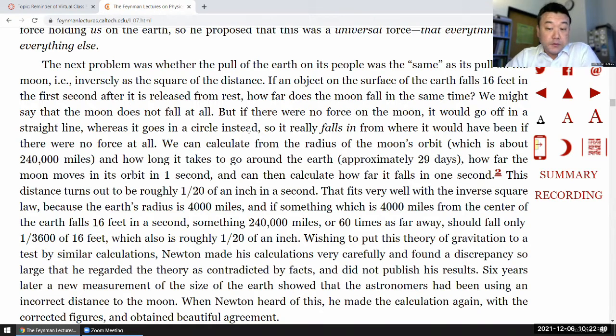But, from the rest, how far does the moon fall in the same time? We might say that the moon does not fall at all, but if there were no force on the moon, it would go off in a straight line, whereas it goes in a circle instead. So, it really falls in from where it would have been if there were no force at all. We can calculate from the radius of the moon's orbit, which is about 240,000 miles, and how long it takes to go around the Earth, approximately 29 days, how far the moon moves in its orbit in one second, and can then calculate how far it falls in one second.